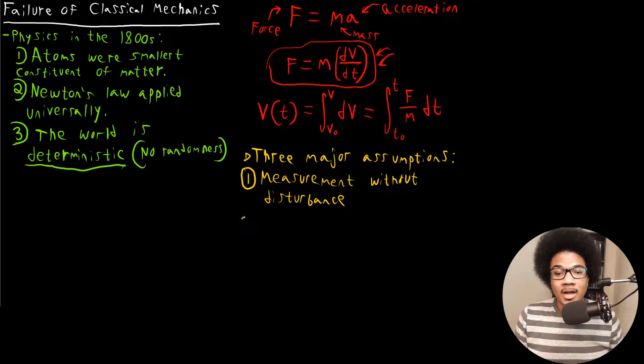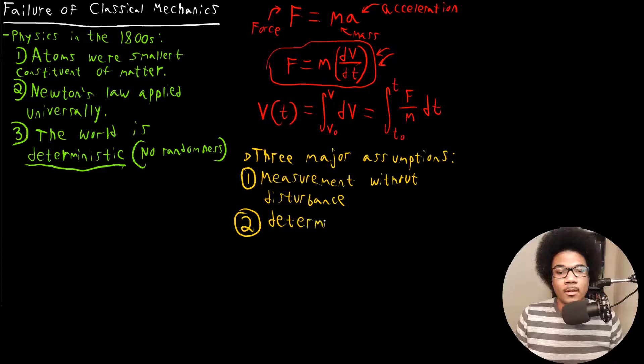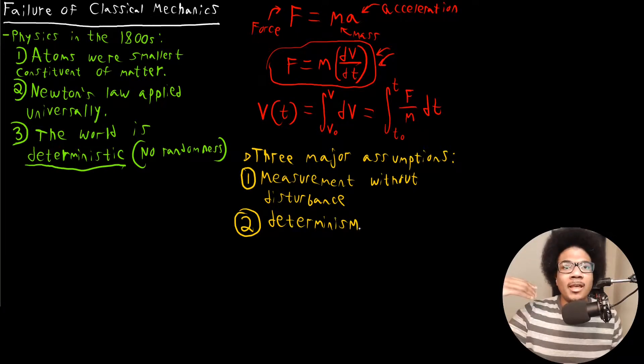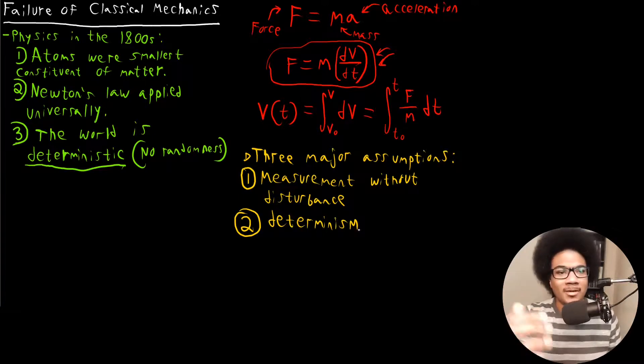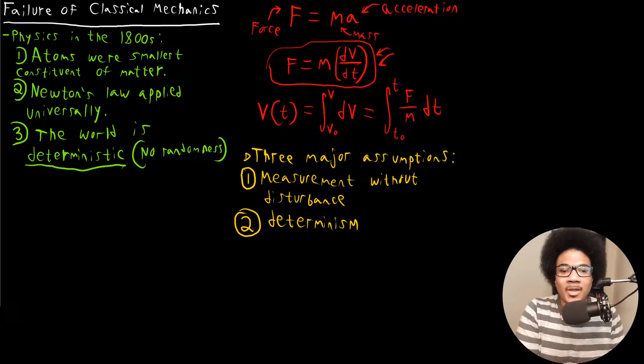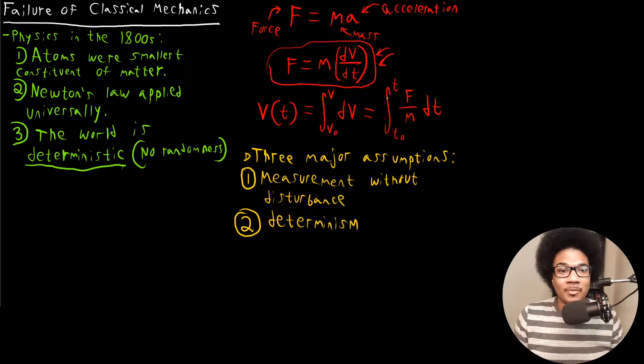Now, the second one, the second assumption is, again, determinism. Again, we just went over what deterministic is. Determinism means you're going to get the same output from a given input. If you know the position, if you know the velocity, you can calculate the forces. If you know the forces, you can calculate the velocity. It's that determinism that drives classical mechanics. It is not present at the subatomic level. At the subatomic level, there are going to be a lot of small fluctuations that introduces a lot of randomness. Again, this type of continuous integral over the energy is going to be a no-go. You can't do that. So that's the second one.